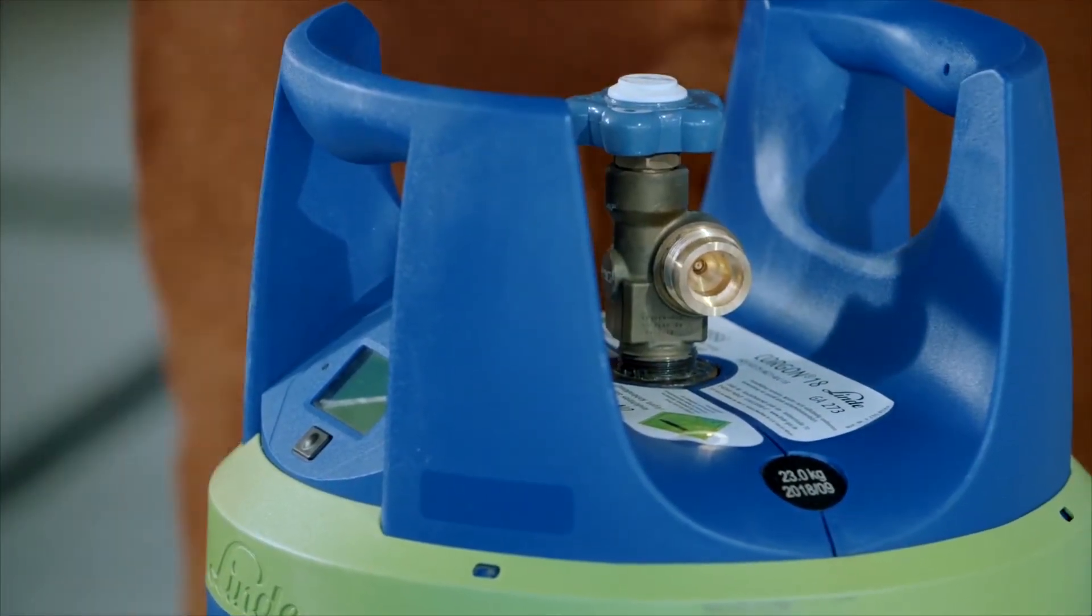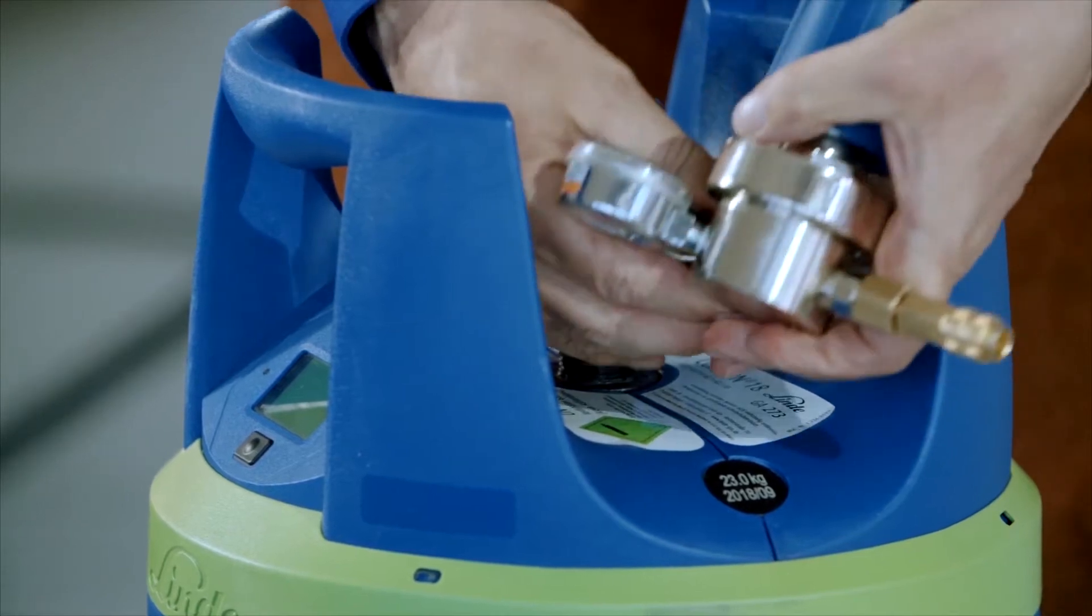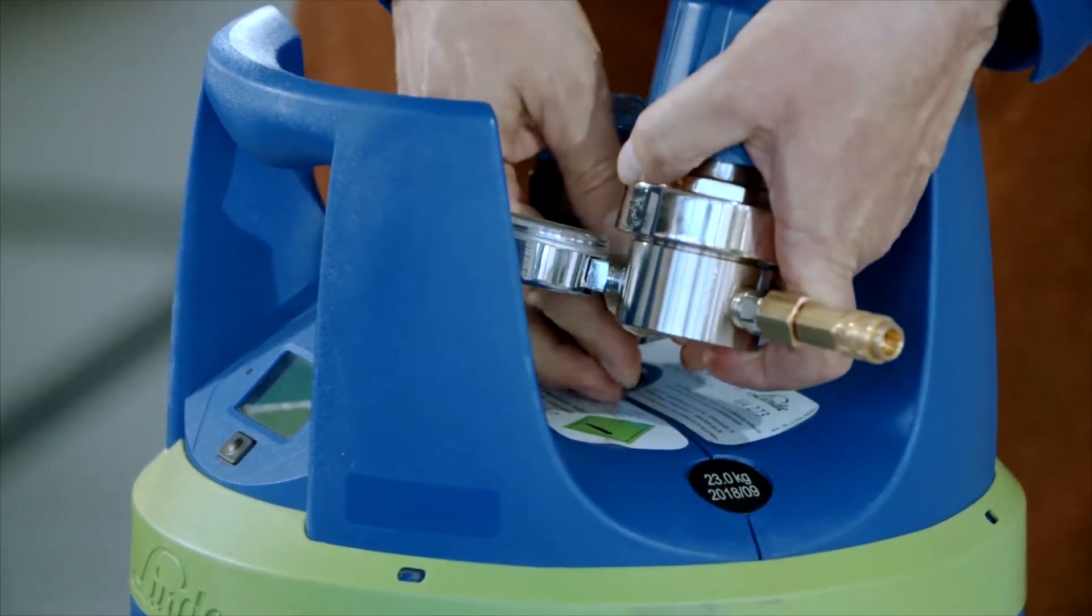First of all, connect the pressure regulator. Simply screw it on by hand and tighten using a wrench.